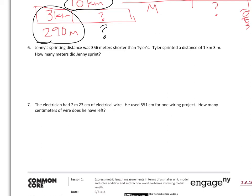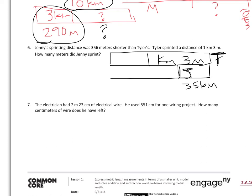For question 6, it says, Jenny's sprinting distance is 356 meters shorter than Tyler's. Tyler's sprinting distance is 1 kilometer and 3 meters. Hers is shorter. This is Tyler, and then this one is Jenny's. And she is sprinting, this distance actually is what we know, 356 meters shorter. We don't know how much she actually sprints. So if we thought about Tyler's total distance as 1 kilometer and 3 meters, and we know that Jenny is 356 meters shorter, to find this, we could simply take Tyler's, subtract the shorter distance, and then that will tell us how much Jenny ran.